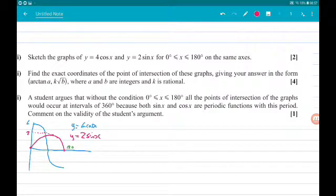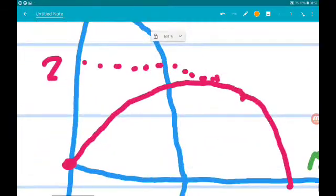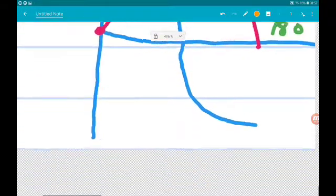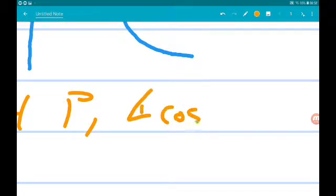Okay then part 2 wants us to find the exact coordinates of the point of intersection of the graphs. Giving your answer in the form arctan a, k root b where a and b are integers and k is irrational. Okay so what we're looking for then are the coordinates at this point. I'm going to call this point P. So at P the two graphs are equal. So 4 cos x is equal to 2 sin x.